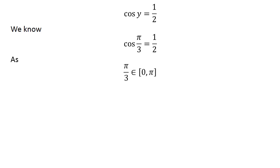As pi upon 3 lies in the close interval of 0 and pi, so pi upon 3 is the principal value of inverse of cosine of half.